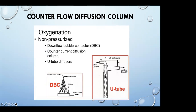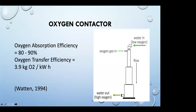Counterflow designs — some older YouTube-type designs or DBC, the downward bubble contactor — work on almost the same basic principle as the saturator, just not under as much pressure. There is actual oxygen contact percentage. I'm conservative, but efficiency is about 80 to 90%, tending toward 90% and a little higher now with more efficient designs.